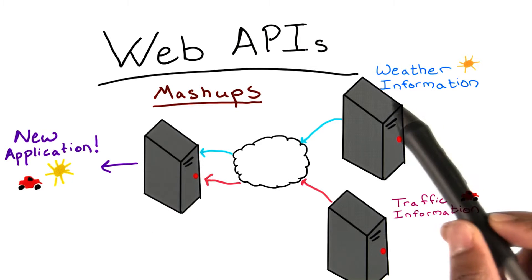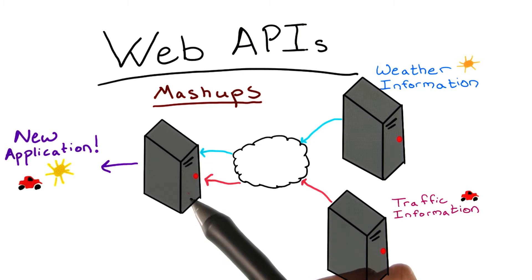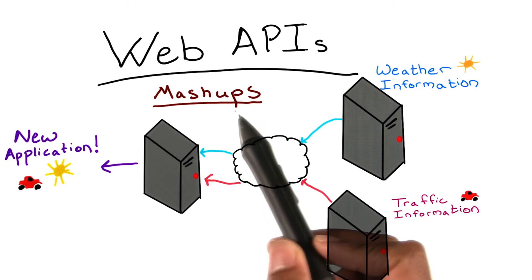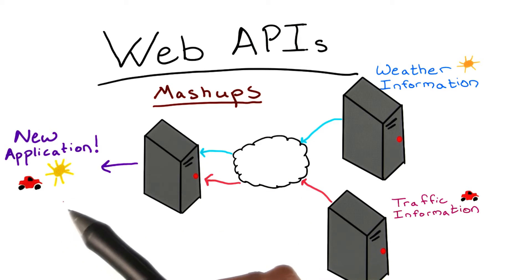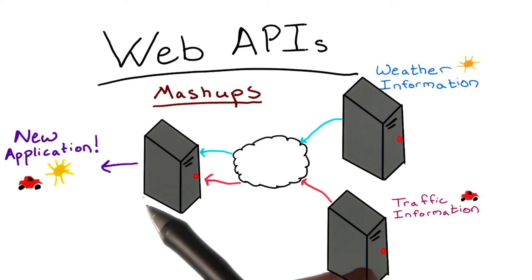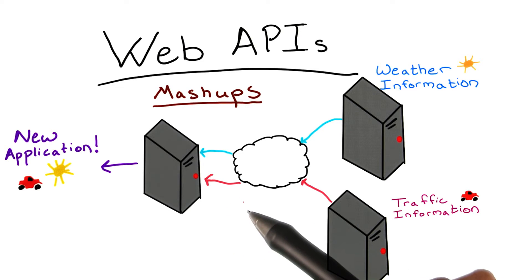A machine can use multiple web APIs to create a new application, sometimes called a mashup, providing users with a new experience that leverages existing applications. Soon you'll be making a mashup of your own.